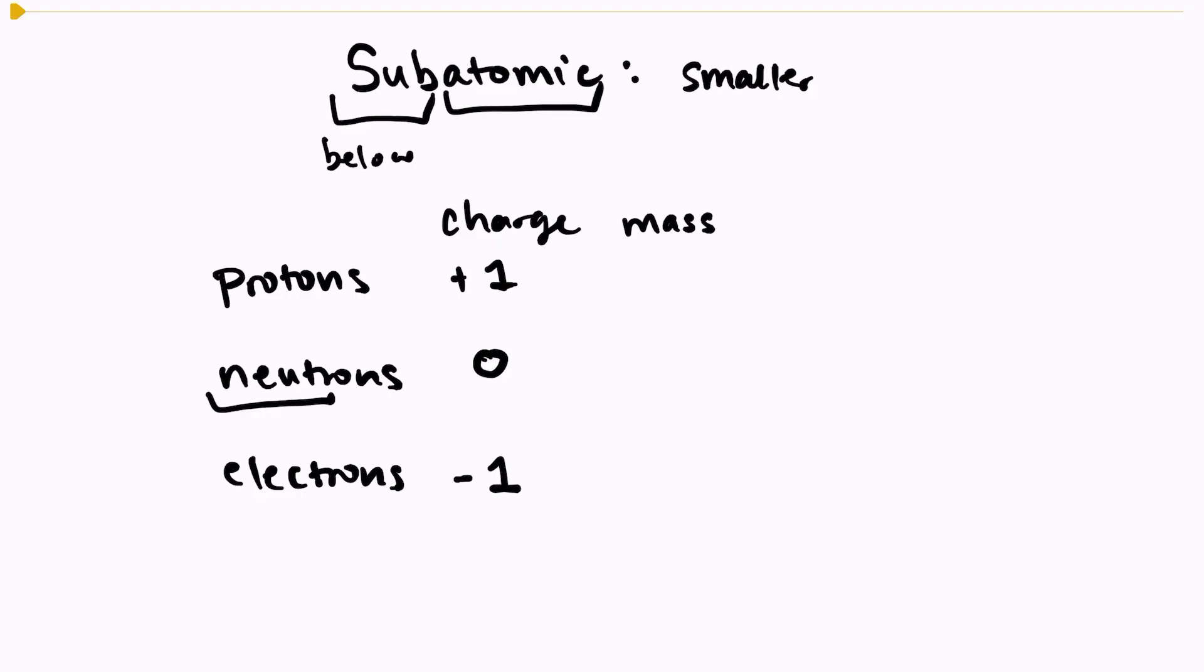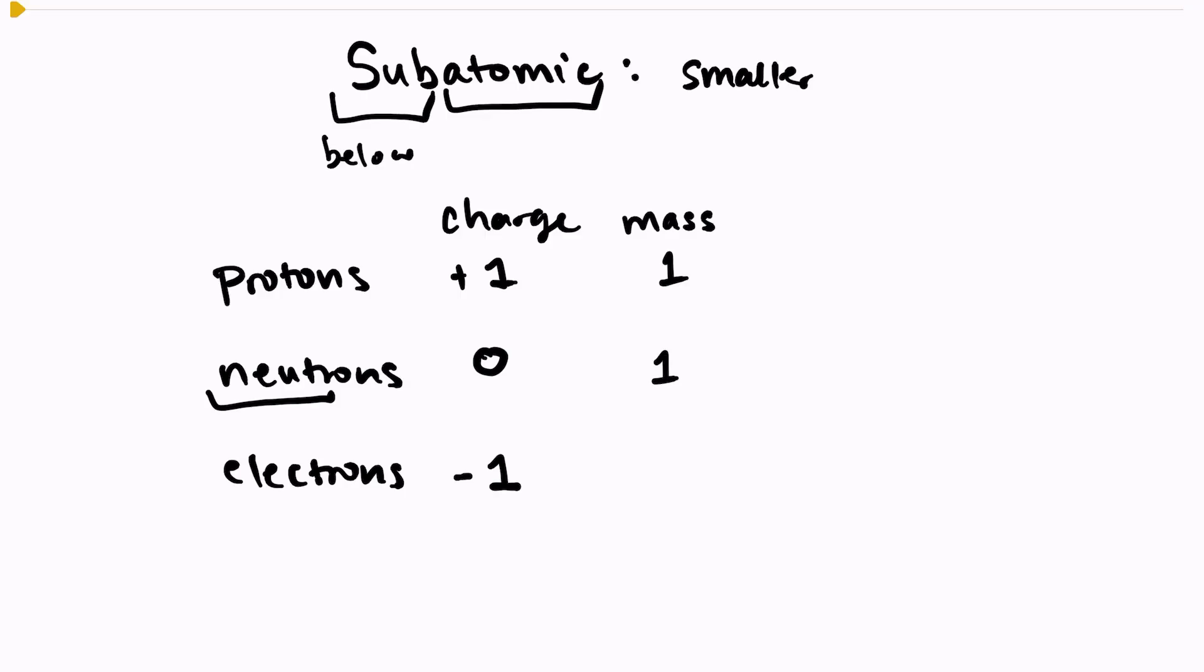So the relative mass of a proton is one, the relative mass of a neutron is one, and the relative mass of an electron is about one over 1840 compared to the mass of a proton.